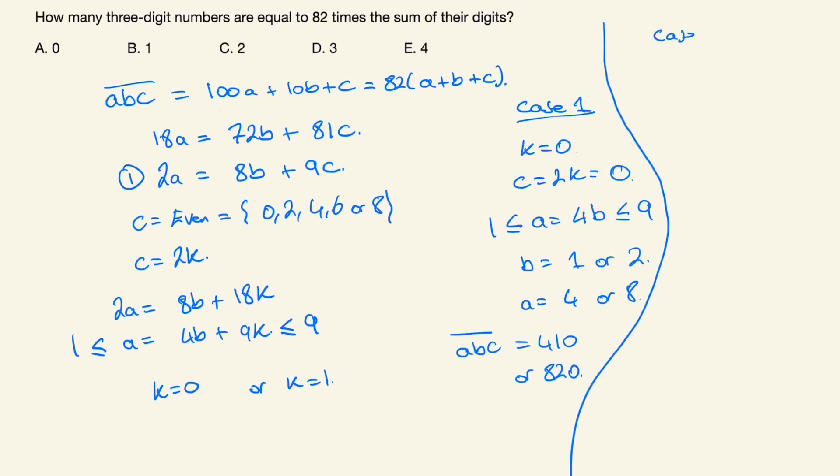Case 2 would be when K equals 1. C would still be 2K or 2 times 1, so C would be 2. And A which is 4B plus 9K would now just become 4B plus 9. This still lies between 1 and 9, and therefore we can only have one solution for B: it is when 4B equals 0 or B equals 0.